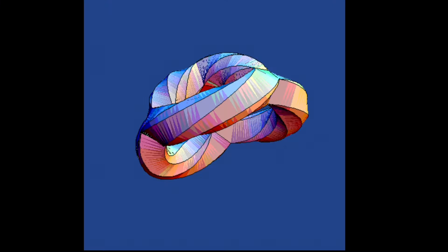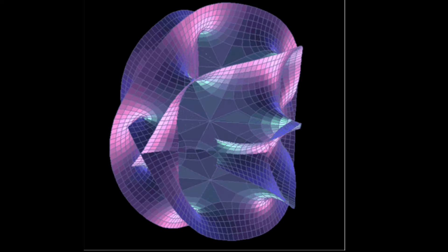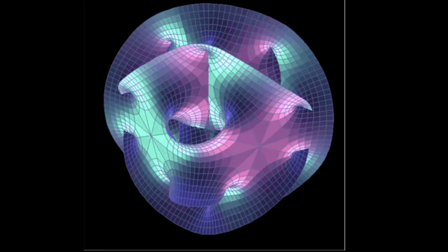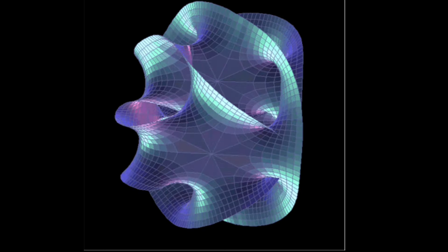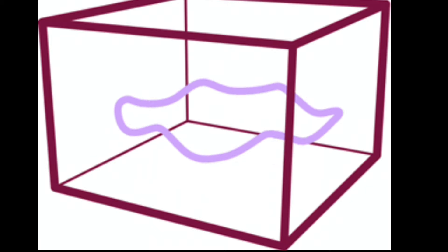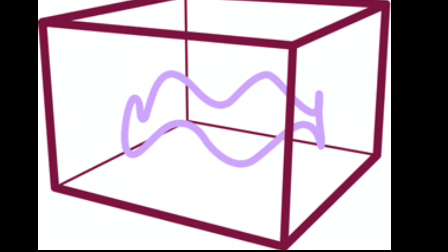Another challenge is that string theory is not unique. There are many different versions of string theory, each with different properties and predictions. In fact, there are so many possibilities that some physicists have proposed the idea of the string theory landscape, a vast collection of possible universes, each with its own laws of physics. We would then live in one of these universes, chosen randomly or by some unknown principle.